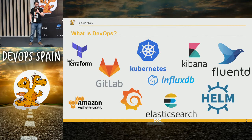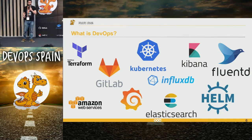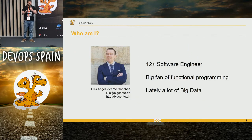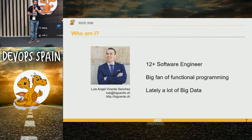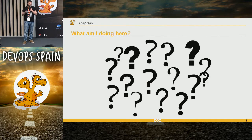These are just a few of the tools my team is using right now to solve all these problems. My name is Luis. I have 12-plus years of experience as a software engineer and I'm a big fan of functional programming. I have been doing a lot of big data lately. So why am I here? I'm a software engineer — why am I giving a talk about DevOps at a DevOps conference?